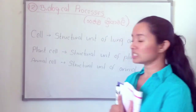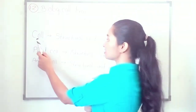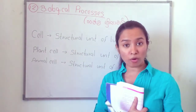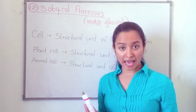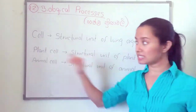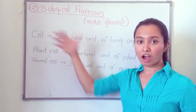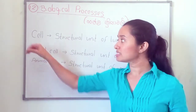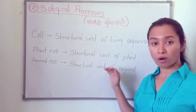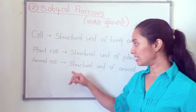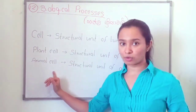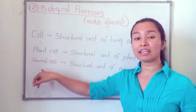So what is the basic unit? The basic unit is the cell — the structural unit of living organisms. Living organisms means both plants and animals. So the structural unit of living organisms is the cell. Our body is made up of numerous cells. The structural unit of a plant is called a plant cell, and the structural unit of an animal is called an animal cell. So there are two types of cells: plant cells and animal cells.